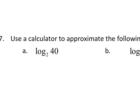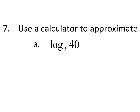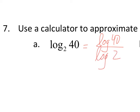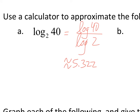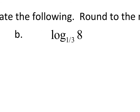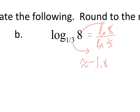Using a calculator to approximate these, we use our change of base formula. A change of base says this is going to be the common log or natural log of 40 over the common log of 2 — both ones we can put into our calculator. Using the calculator, we get about 5.322. Using change of base for another example with natural log of 8 over natural log of one-third, we get about negative 1.892.